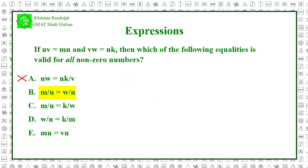Suppose answer B is true: m over u equals w over n. We know that uv equals mn, so dividing both sides by un, we get v over n equals m over u. But if answer B is true, then m over u equals w over n, so that implies w equals v, which is not necessarily true. So answer B is invalid also.